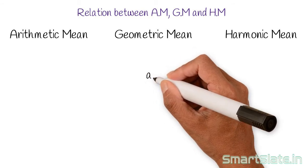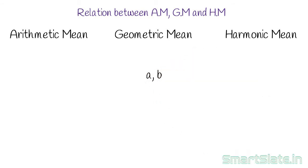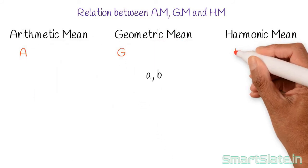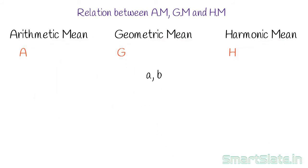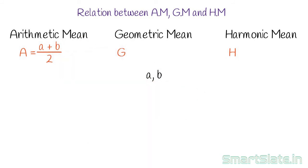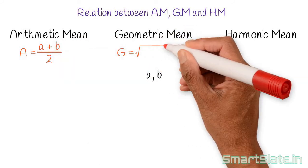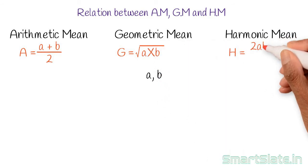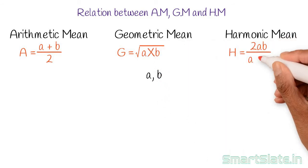If a and b are two numbers, then let a, g, and h be their arithmetic mean, geometric mean, and harmonic mean respectively. Then we have: a = (a + b) / 2, g = √(a × b), and h = 2ab / (a + b).